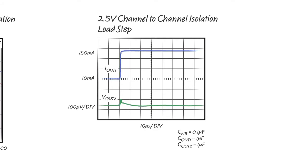This next plot shows how output 2 changes due to a disturbance on output 1. In the transient domain, we can see a 140 milliamp load step on output 1 and less than 100 microvolt transient on the adjacent output.